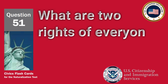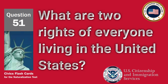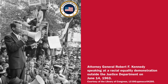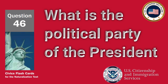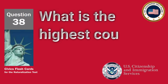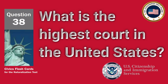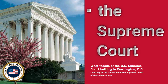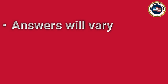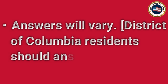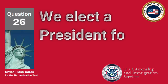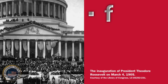What are two rights of everyone living in the United States? Freedom of expression and freedom of speech. What is the political party of the President now? The Republican Party. What is the highest court in the United States? The Supreme Court. Who is the governor of your state now? Answers will vary. District of Columbia residents should answer that D.C. does not have a governor. We elect a president for how many years? Four.